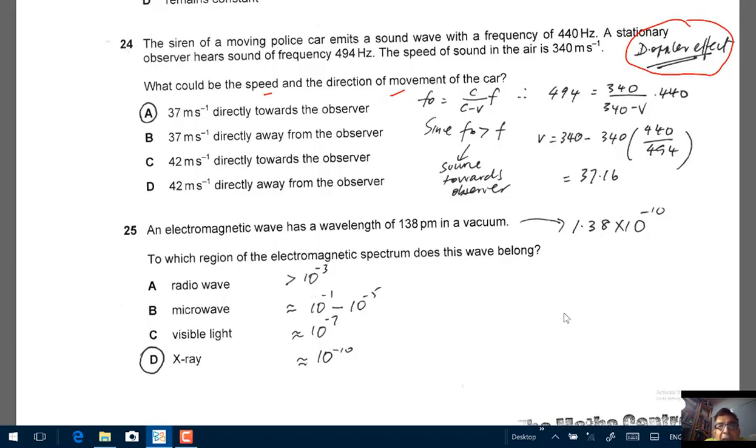This is the formula that we will be using. This is the observed frequency for the observer, and this F is your source. So the source here is the moving police car, and the frequency is 440 hertz. What's the speed? That's what we're trying to find. Let's call the speed of the police car V. And then we have a stationary observer.